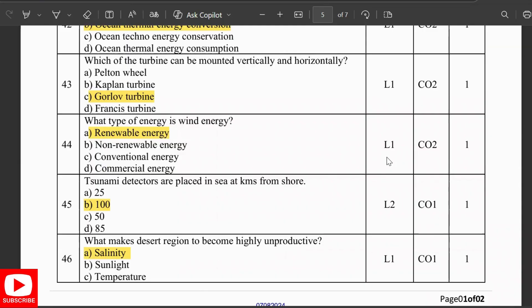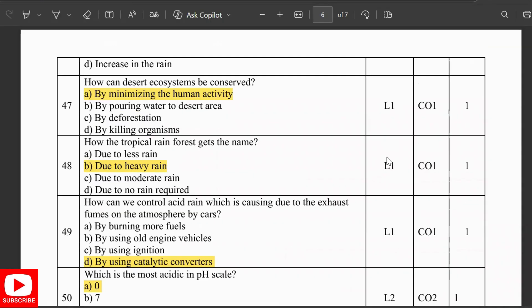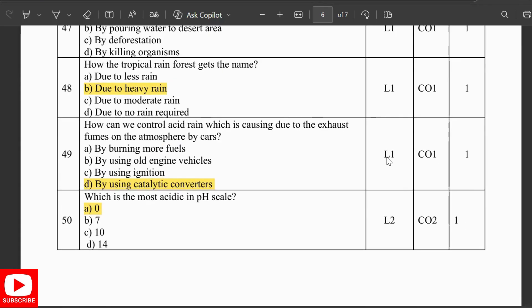What type of energy is wind energy? It is renewable. Tsunami detectors are placed 100 kilometers in the sea from the shore. What makes desert regions become highly unproductive? The salinity. How can desert ecosystems be conserved? By minimizing human activity. How do tropical rainforests get their name? Due to heavy rain. How can we control acid rain which is caused by exhaust fumes from cars? By using catalytic converters. Which is the most acidic on the pH scale? Zero.